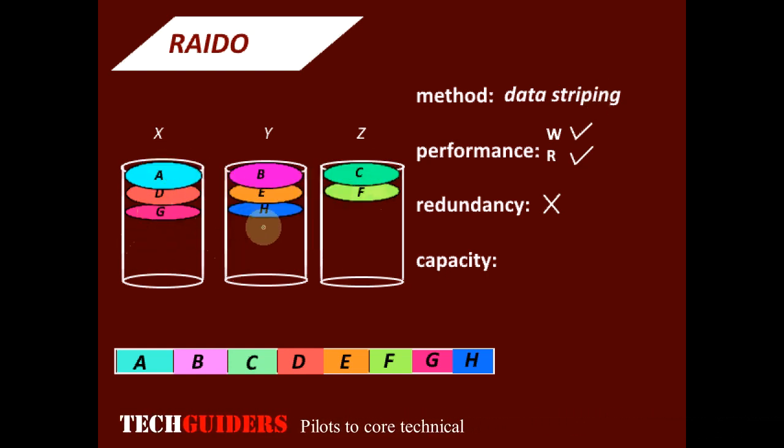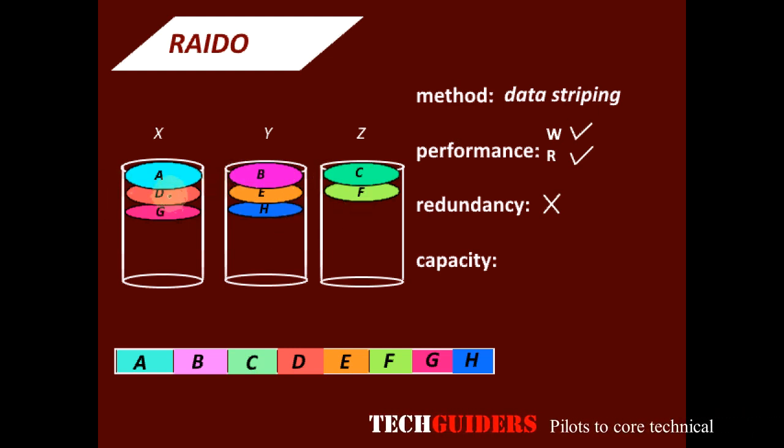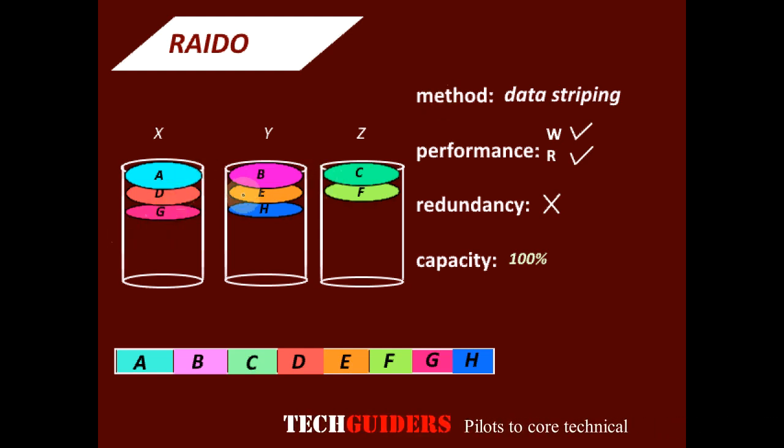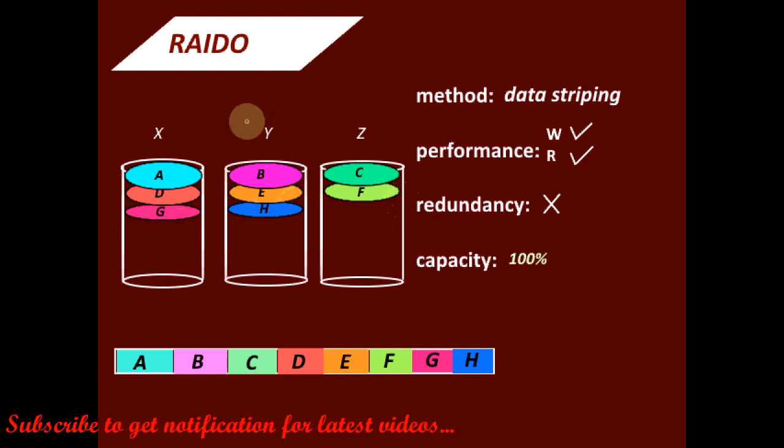And what is the available or the usable disk capacity in the RAID 0 array? It is the sum of the capacities of all the disks in the set. Here, if each disk is of 1TB size, then there is a usable disk capacity of 3TB. Hence, the usable or the available disk capacity is 100%. And since we stripe the data across two or more disks, the minimum number of disks required for RAID 0 setup is 2.